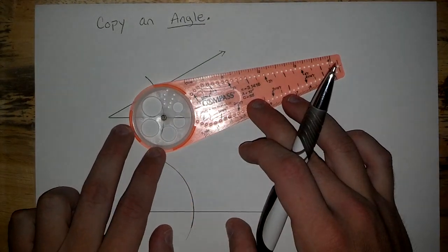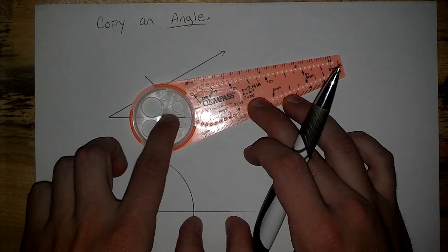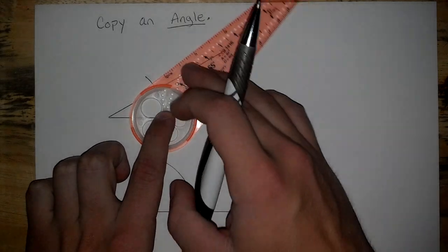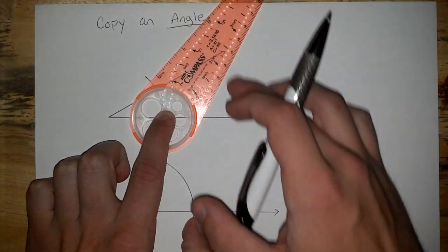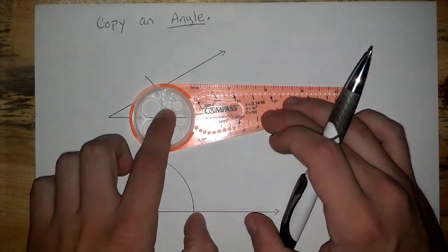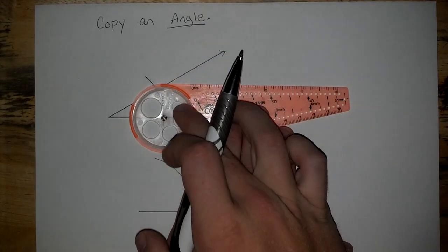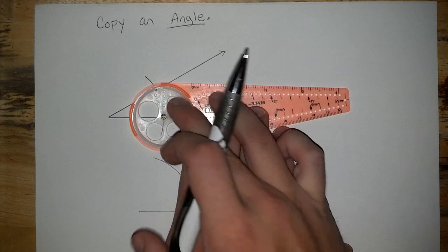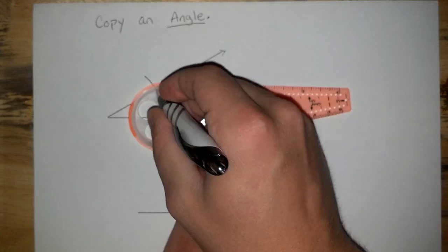Line up one of those points where it crisscrossed. Come over here and line up the other point that crisscrosses. Looks like I might end up using the white inside part. Yep, right there. The very outside edge.